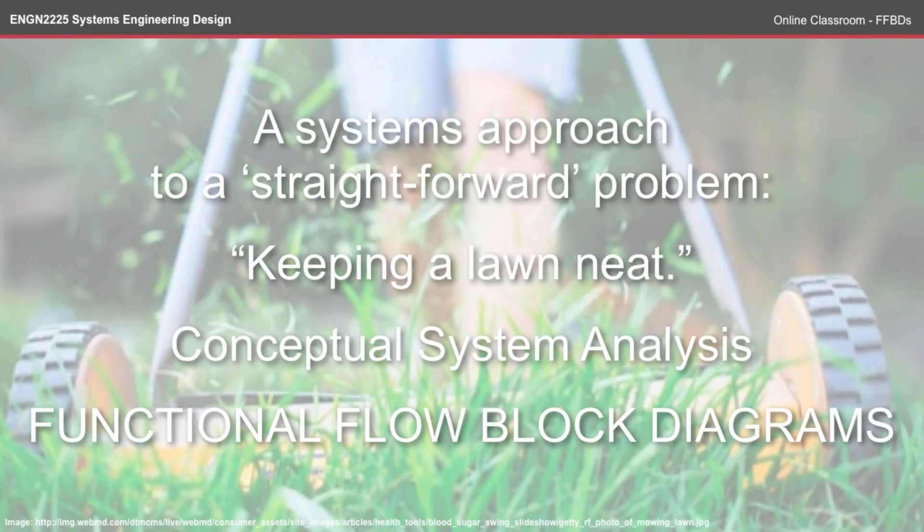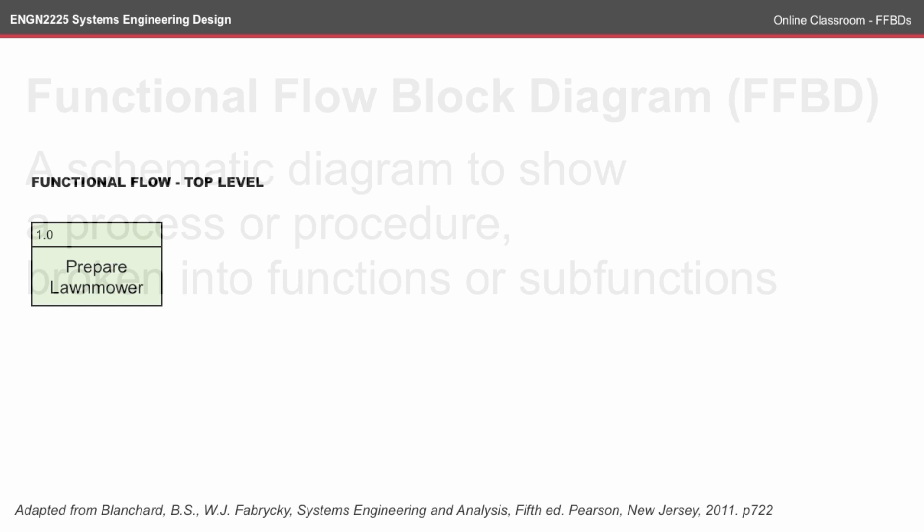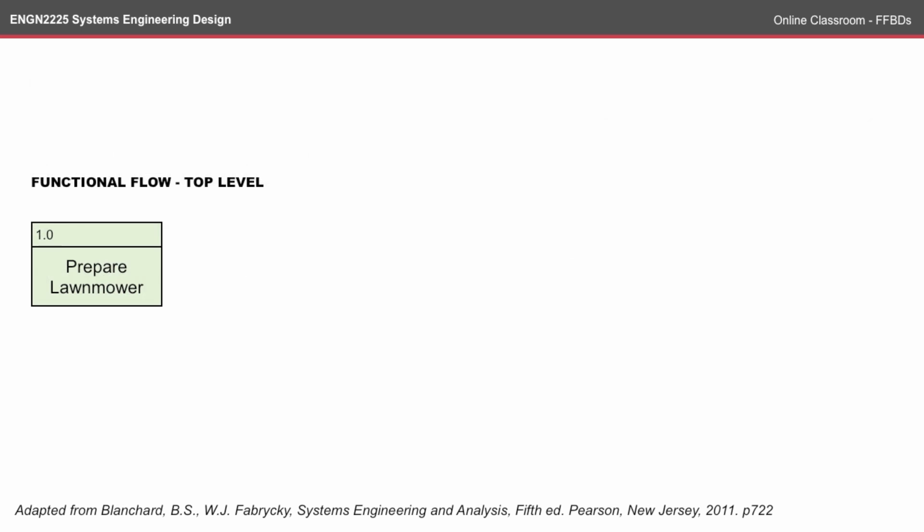In this episode of the Online Classroom, we use functional flow block diagrams to get a better understanding of the systems approach to a straightforward problem: keeping a lawn neat. This sits under the conceptual system analysis topic. Functional flow block diagrams are basically a schematic diagram to show a process or procedure broken into functions or sub-functions, generally in a sequence of how you would go about doing a particular function.